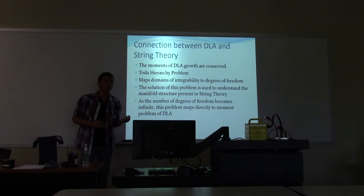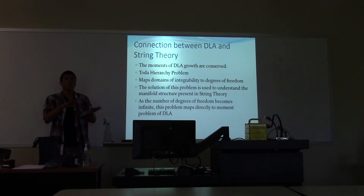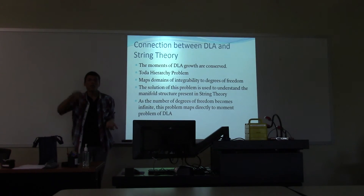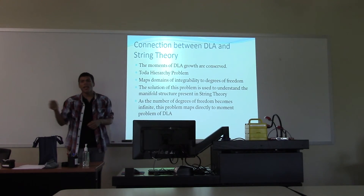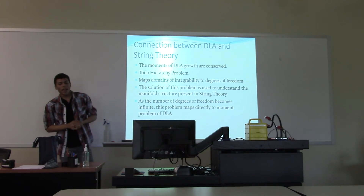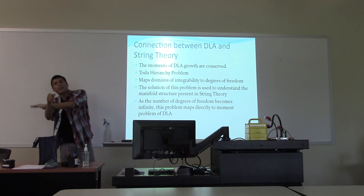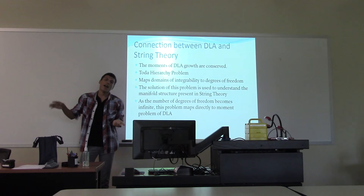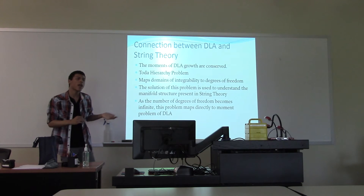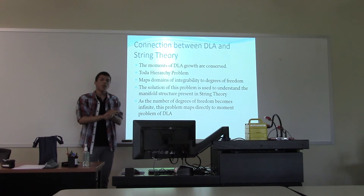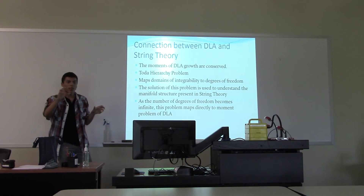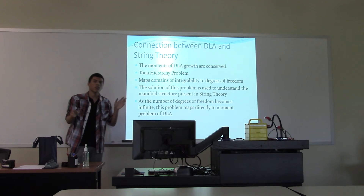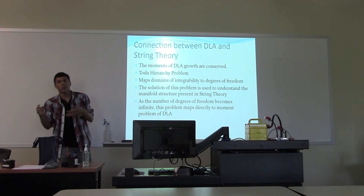In string theory there's a problem called the total hierarchy problem. String theory investigates more general objects called manifolds — basically surfaces — with strings on them oscillating. You want to know how many ways a string can oscillate; for instance, I can move my arm up and down, left or right, and in and out — that's three degrees of freedom. If something blocks my arm, I've effectively lost one degree of freedom. The total hierarchy problem tries to figure out how many degrees of freedom you'll have given all the constraints on your oscillating object. In DLA, each branch is considered a degree of freedom, so as you grow a really large DLA with an infinite number of branches, determining the conservation of moments in DLA effectively becomes the same problem as determining how a string oscillates on a manifold.